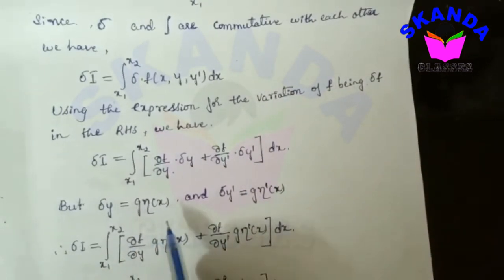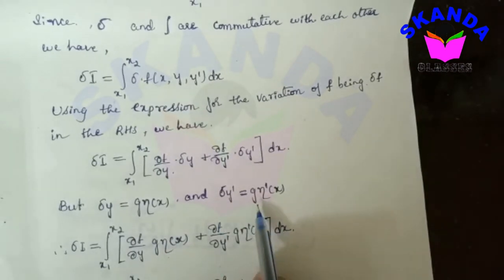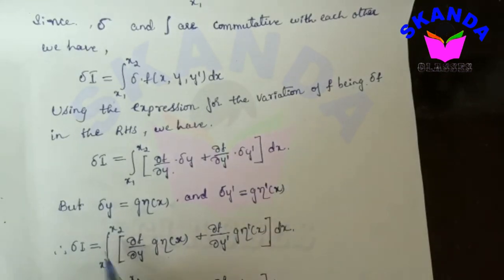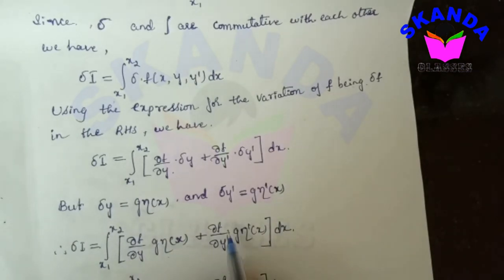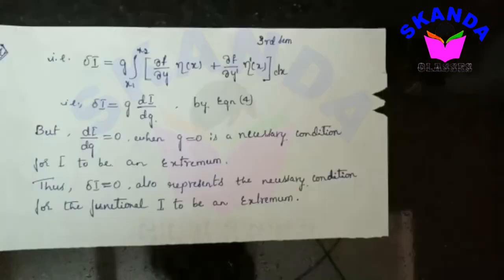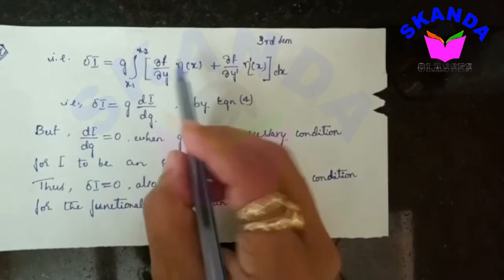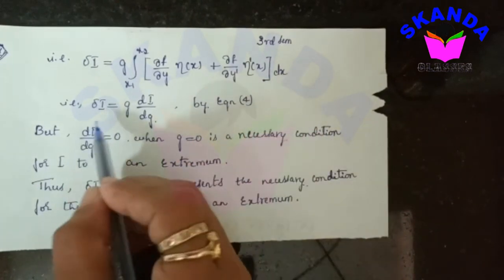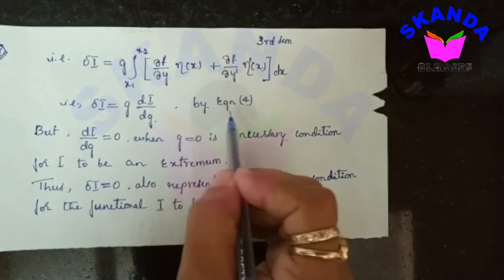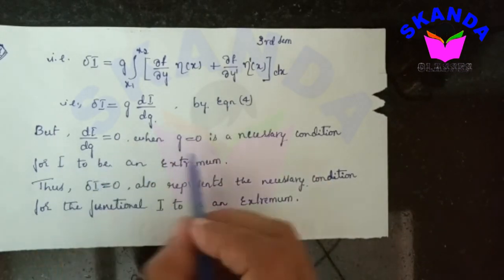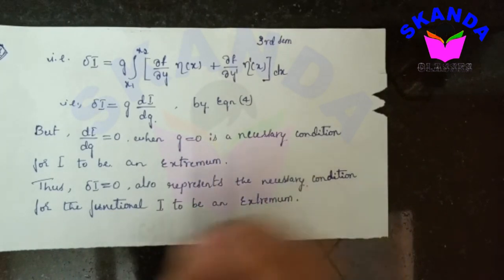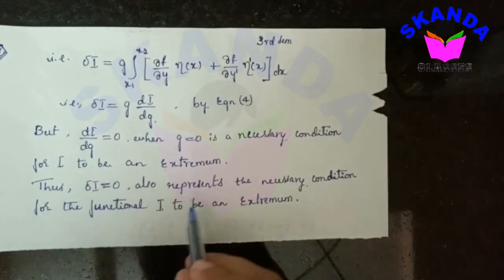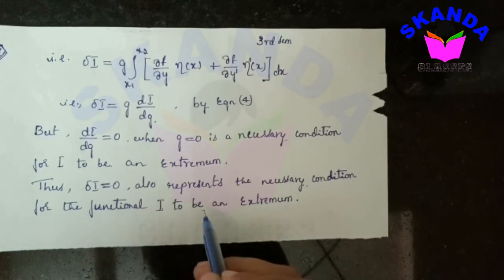Therefore δi equals g times the integral from x1 to x2 of [∂f/∂y · η(x) + ∂f/∂y' · η'(x)] dx, that is δi equals g · di/dg using equation 4. But di/dg equals 0 when g equals 0 is the necessary condition for i to be an extremum. Thus δi equals 0 represents the necessary condition for the functional i to be an extremum. Hence the proof.